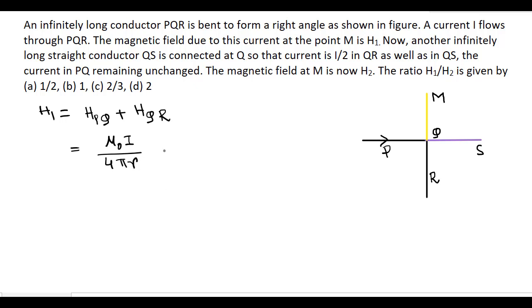Plus the magnetic field due to QR. Now for QR, the magnetic field at M is 0. So this is equal to mu 0 I divided by 4 pi R.